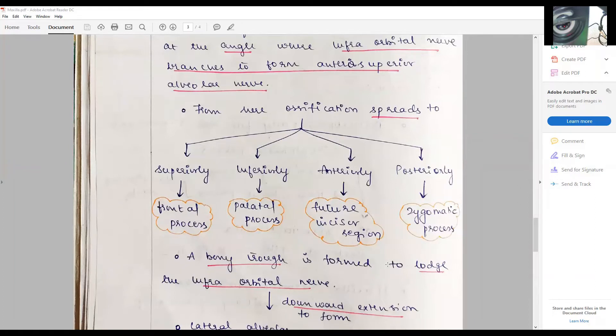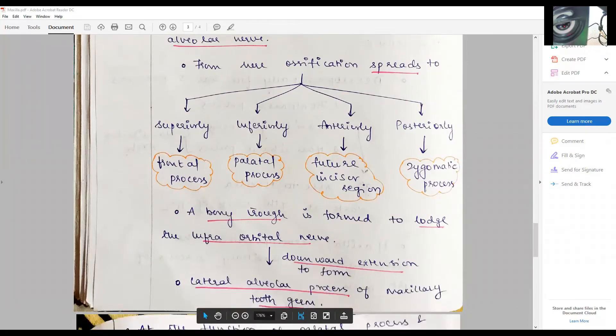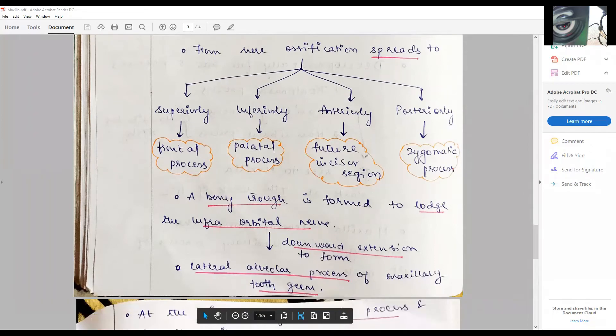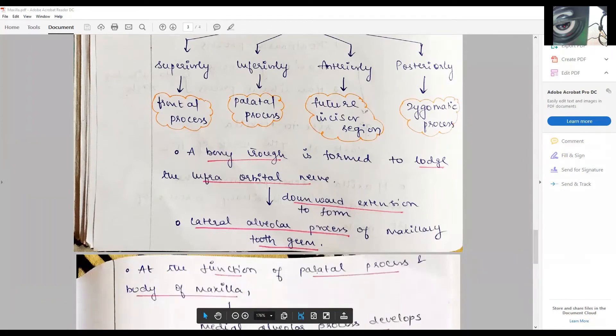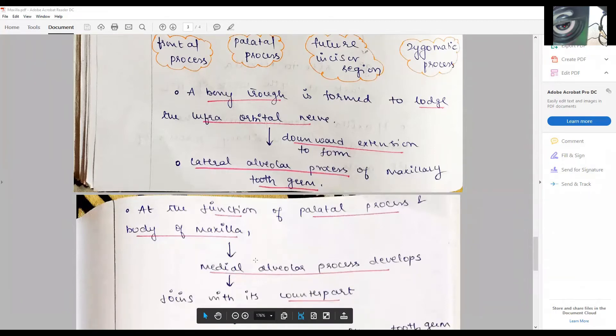Together they form a bony trough to lodge the infraorbital nerve, which downwards extends to form the lateral alveolar process of the maxillary tooth germs. At this junction of palatal process, the body of maxilla is contributed by the medial alveolar process.